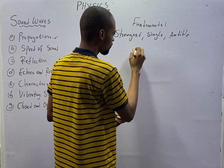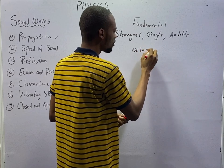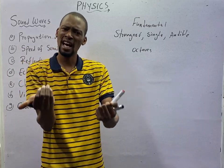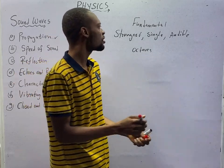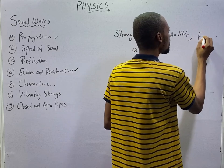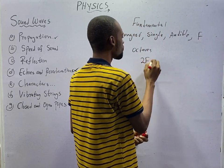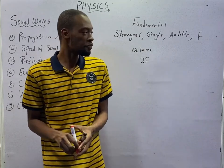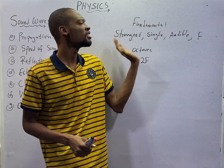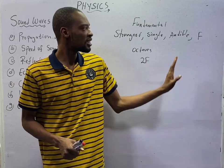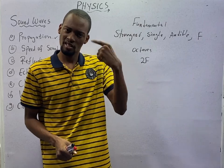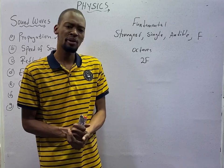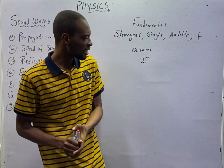And we have octaves. Octave is a sound of two times the fundamental frequency. So if fundamental is F, octaves will therefore be 2F, two times the fundamental frequency. Fundamental is the sound of the strongest frequency, sound of single frequency, and sound of audible frequency. Octave is a sound of two times the fundamental frequency.